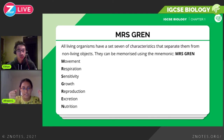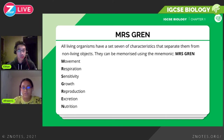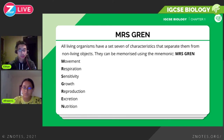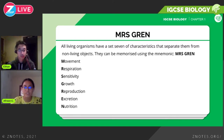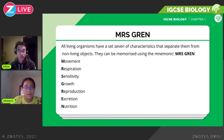There's a mnemonic to memorize the seven characteristics, which is called MRS GREN. M stands for movement, R stands for respiration, S stands for sensitivity, G stands for growth, the second R stands for reproduction, E stands for excretion, and N stands for nutrition. That's easy enough to remember.